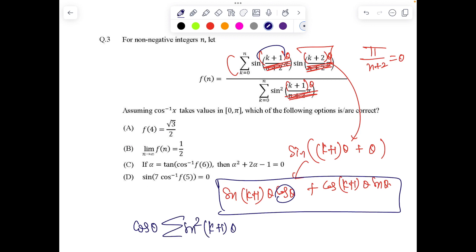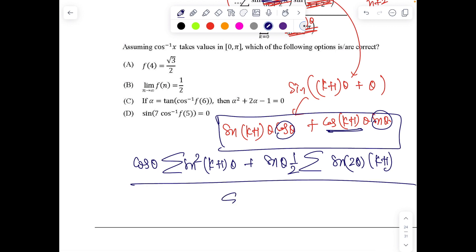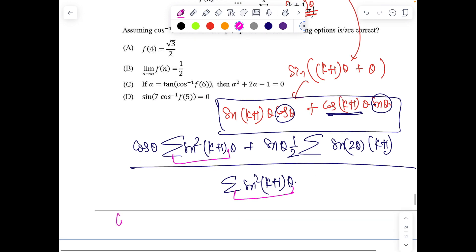We have left with sigma sine square k plus 1 theta, plus, similarly sine theta will be constant, and we are left with sine k plus 1 and cos k plus 1. So that can be manipulated by multiplying and dividing by 2. So that will get sine 2 times theta into k plus 1 divided by sigma sine square k plus 1 theta. Now, it's good news because the first term is getting cancelled. This expression amounts to just cos theta plus sine theta by 2 sigma sine 2 theta k plus 1 over sigma sine square k plus 1 theta.